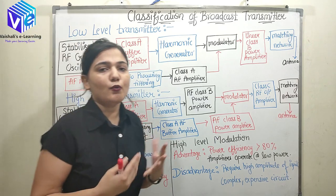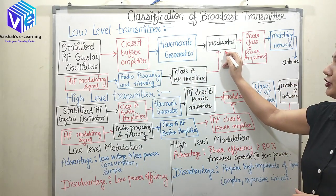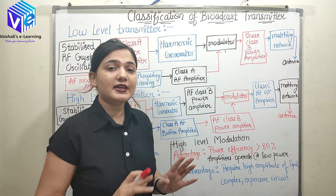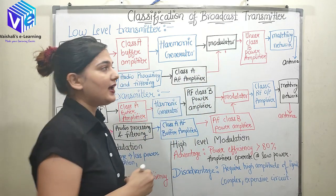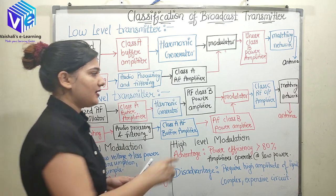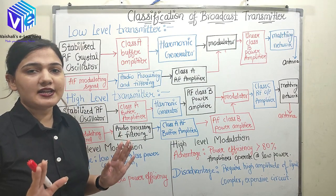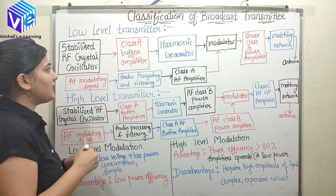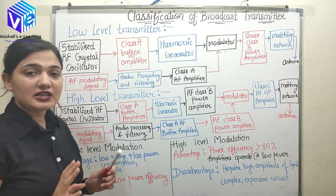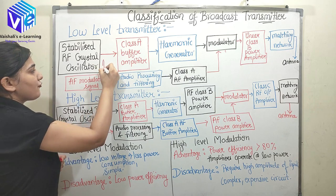Now coming to the low level transmitter: in the low level transmitter, modulation occurs at the low power level. If modulation is occurring at high power level, it is a high level transmitter. The very first block is the stabilized RF crystal oscillator, which we use to produce a stabilized frequency wave.